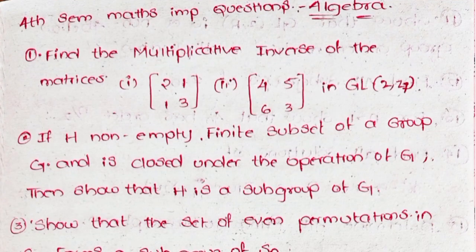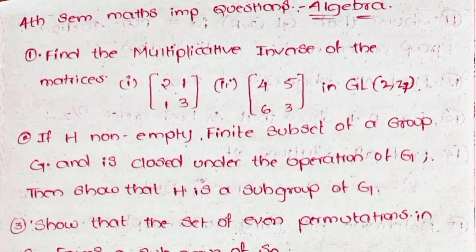First, find the multiplicative inverse of the matrices. First: [2, 1; 1, 3]. Second: [4, 5; 6, 3]. In GL(2, Z7).